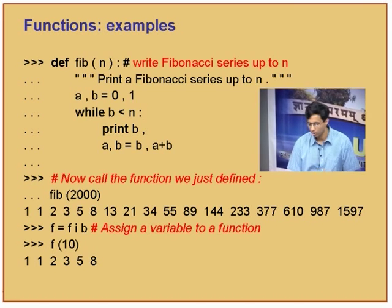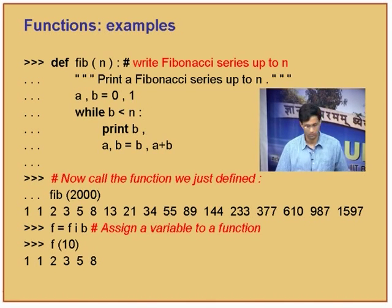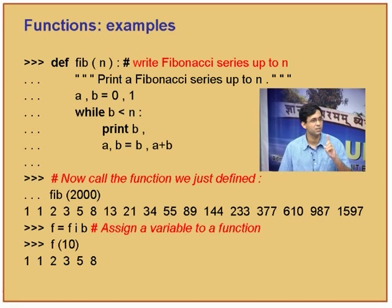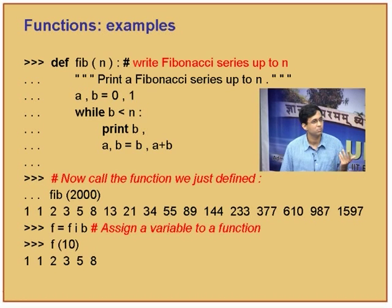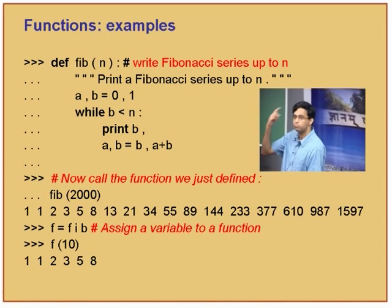Think of it as just another object — a function object sitting in memory — and the name 'fib' is bound to that function object. When you call the function, you call it as fib(argument) and it prints the sequence. Because fib is a name bound to a function object, I can assign another variable to it.